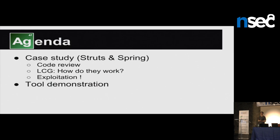The way I divide my talk: there's going to be a first part covering a vulnerability I found in the Java framework, specifically in Struts and Spring. LCG are used in many languages, so it's a category of generator I'm going to present, and it's going to apply to other languages as well. At the end I'm going to present tooling - what you can do in your pen test. The first part will be more theoretical but also cover how exploitation works, because you need to understand how it works to exploit it.